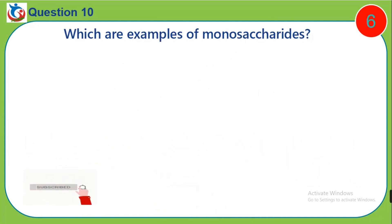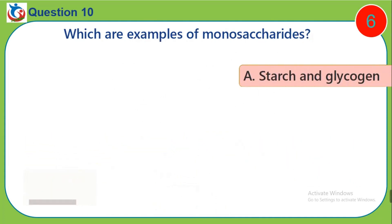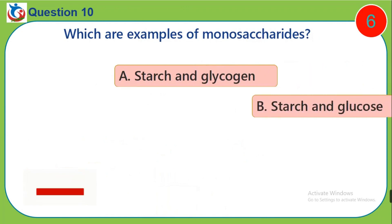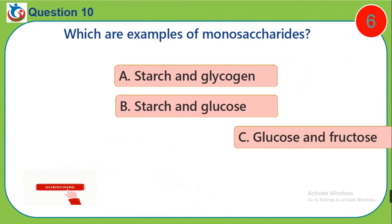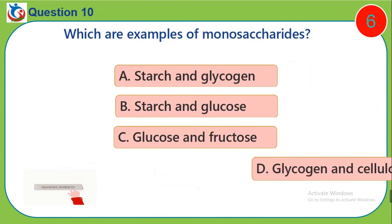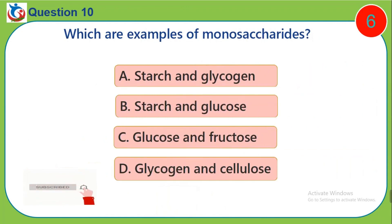Question 10. Which are examples of monosaccharides? A. Starch and glycogen, B. Starch and glucose, C. Glucose and fructose, D. Glycogen and cellulose.